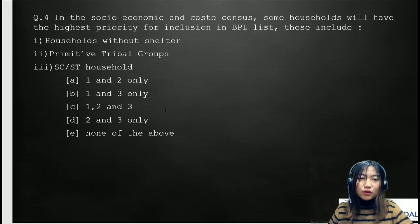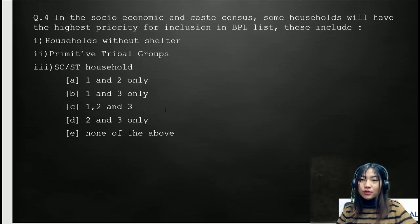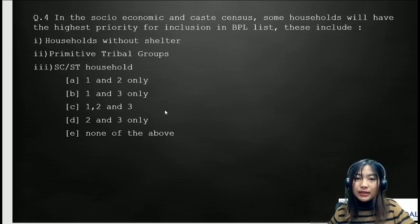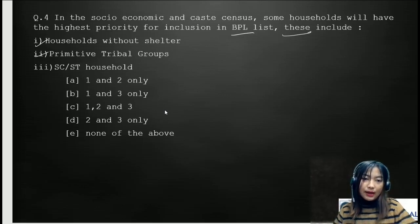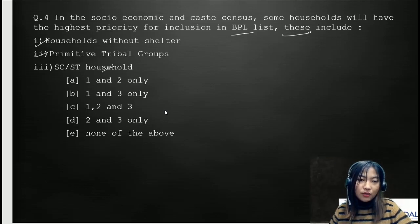Moving on to the fourth question: in the Socioeconomic and Caste Census, some households will have the highest priority for inclusion in the BPL list. These include: number one, households without shelter; number two, primitive tribal groups; number three, SC or ST households. The options are: A, one and two only; B, one and three only; C, one, two and three; D, two and three only; E, none of the above.